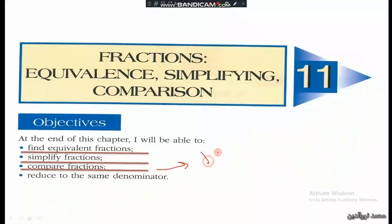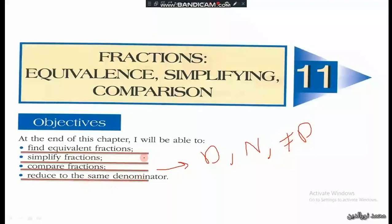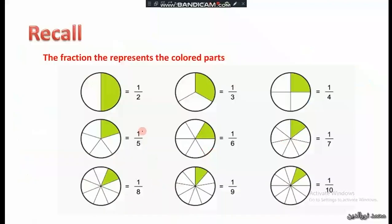The third objective is to compare fractions — comparing fractions when they have the same denominator, the same numerator, or different denominators. For different denominators, we reduce them to the same denominator by finding equivalent fractions. Now let's do some recall of fractions.